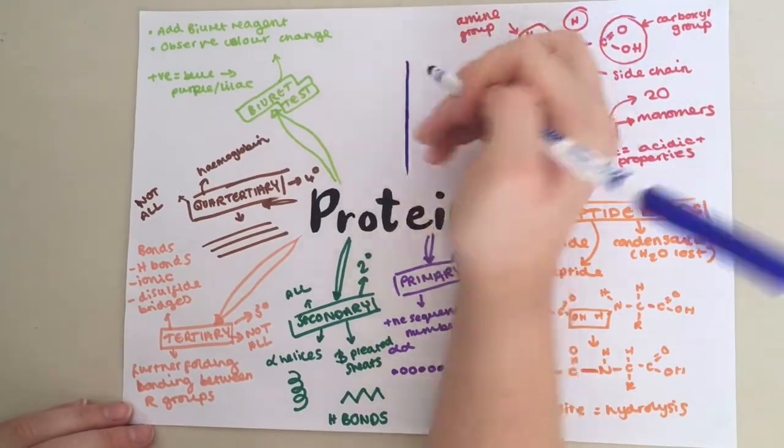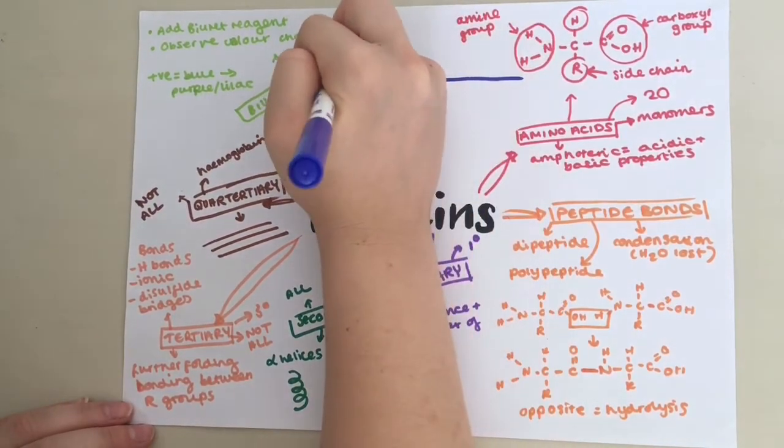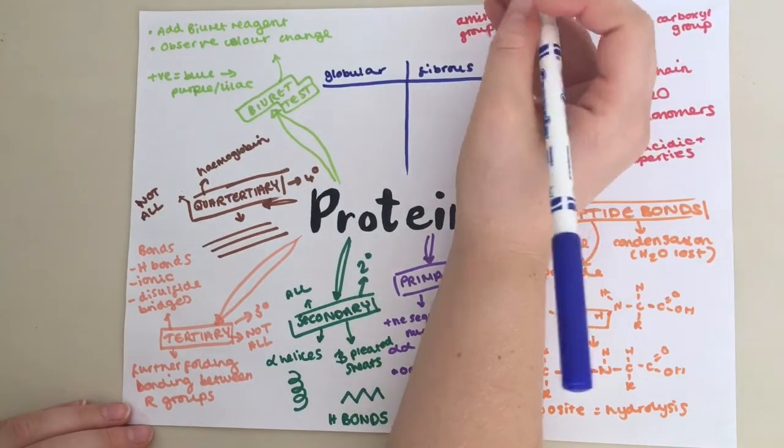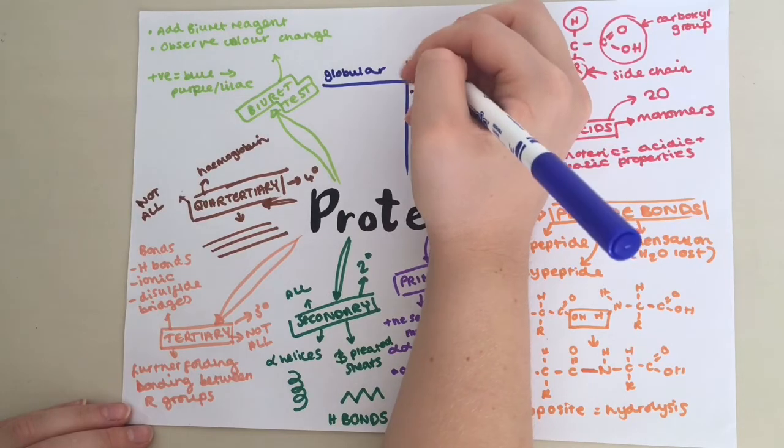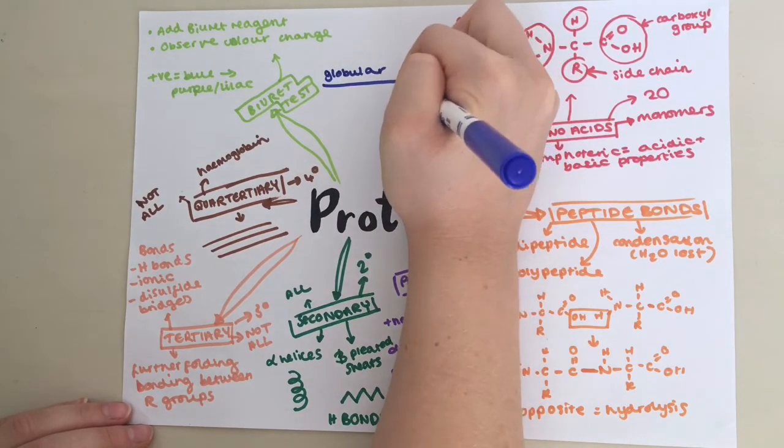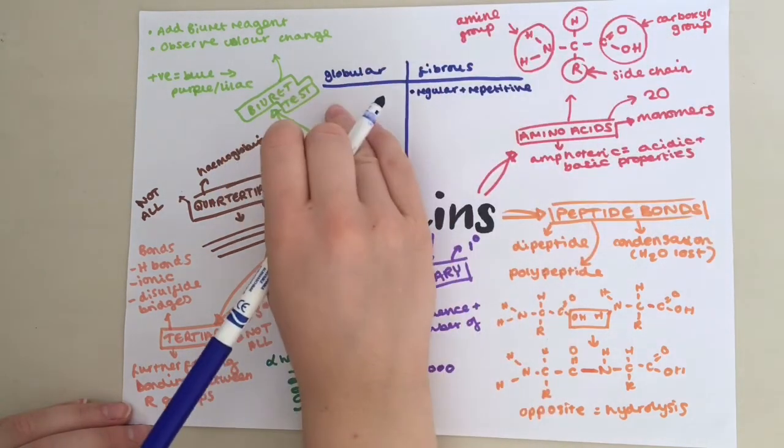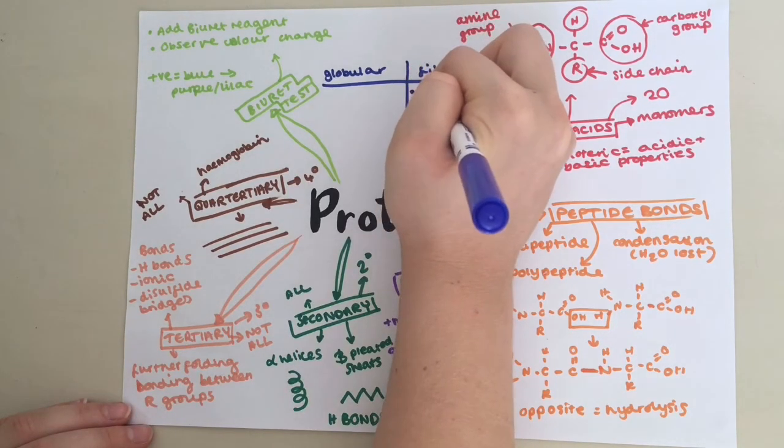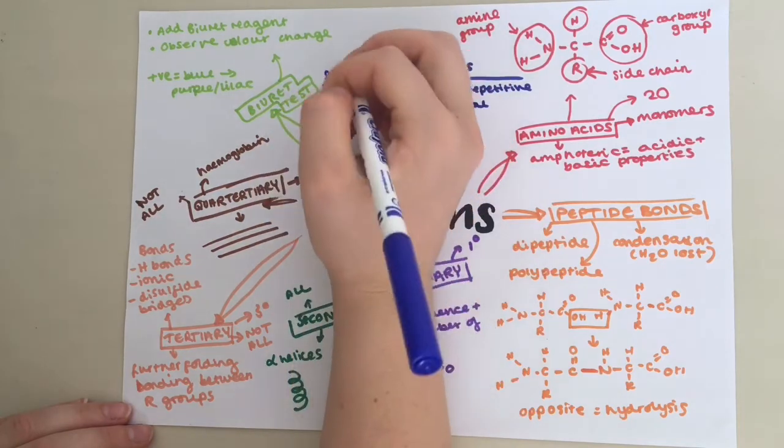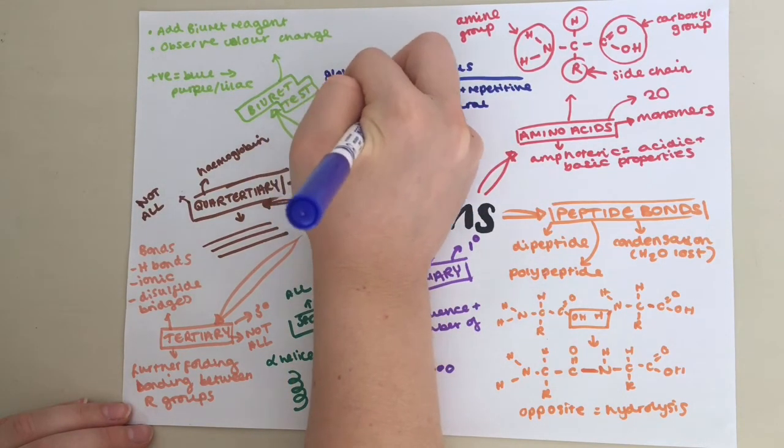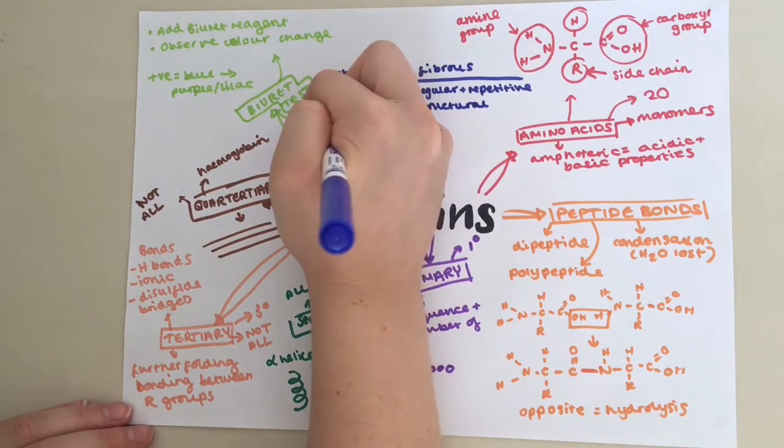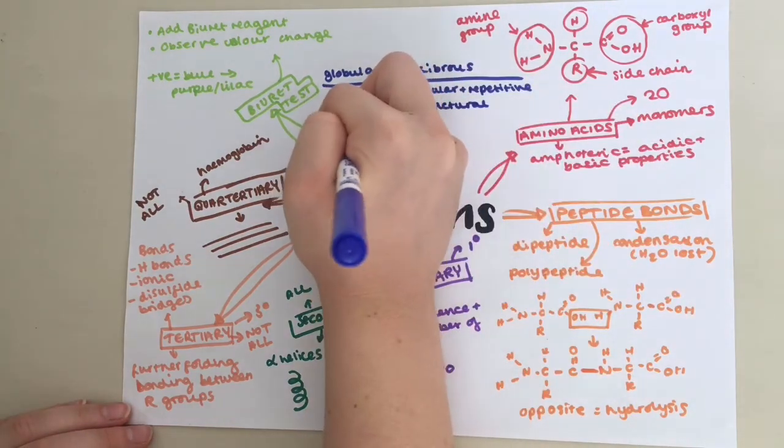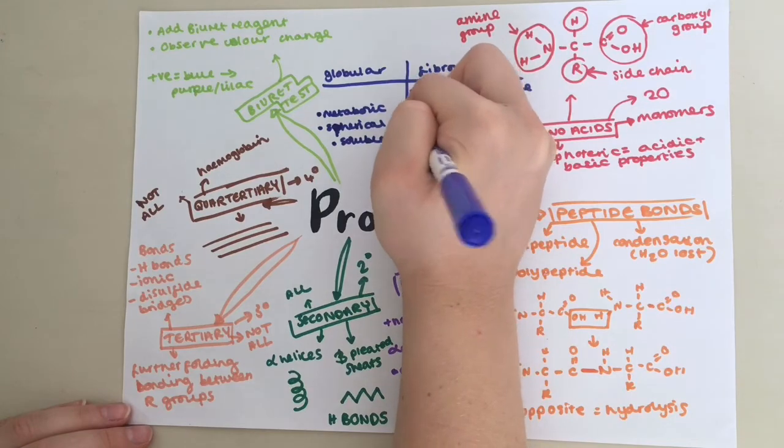Lastly, we will look at the two main types of protein. You have globular and fibrous. Fibrous proteins usually contain regular repetitive polypeptide sequences, whereas globular proteins are not so regular and repetitive. Fibrous proteins have structural functions, whereas globular proteins have metabolic functions. Globular proteins are spherical in shape, as their name suggests. Globular proteins are soluble, whereas fibrous proteins are insoluble.